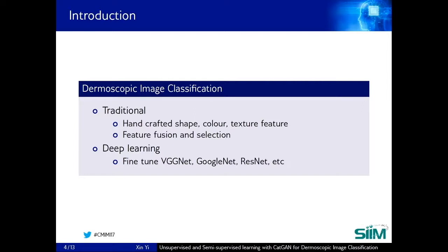Most of the works in the literature fine-tuned pre-trained neural networks, such as VGGNet, GoogleNet, and ResNet for dermoscopy classification. These networks are originally trained on natural image datasets, and the features they learned have been found to transfer very well into the medical image domain. Many good results have been achieved by doing this.